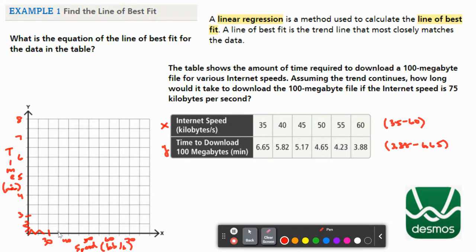Now let's graph our points. We're going to the right, 35, and up 6.65. This is 6.5, so 6.65 is a little bit above. Then we go to the right, 40, and up 5.82, which is just below 6. Then we go 45, 5.17, which is just above 5. And we do 50 and 4.65, and then we do 55 and 4.23, which is halfway about between 4 and 4.5. And 60 and 3.88, which is just below 4. And there is our data.